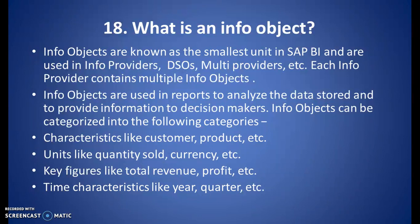Info objects can be categorized into the following categories: characteristics like customer, product, etc.; units like quantity sold, currency, etc.; key figures like total revenue, profit, etc.; and time characteristics like year, quarter, etc.